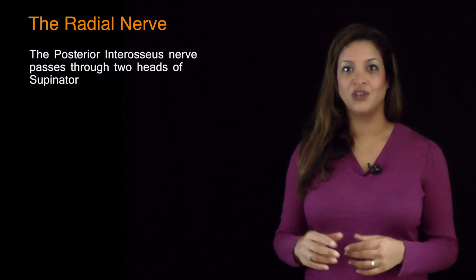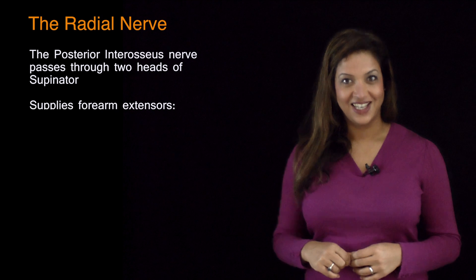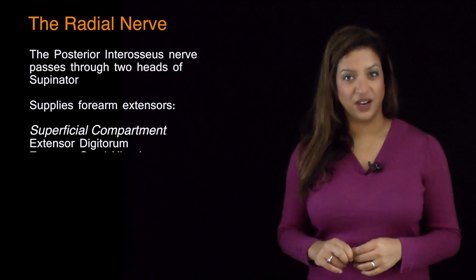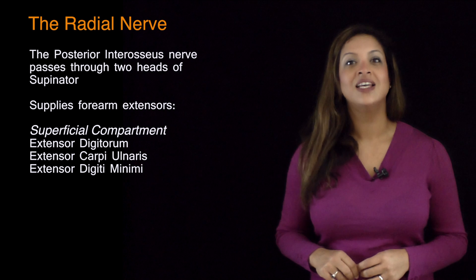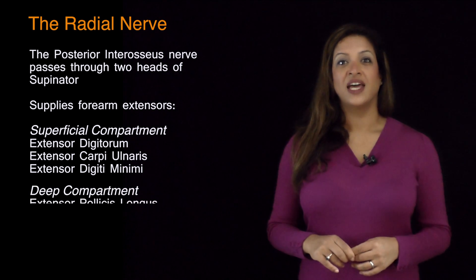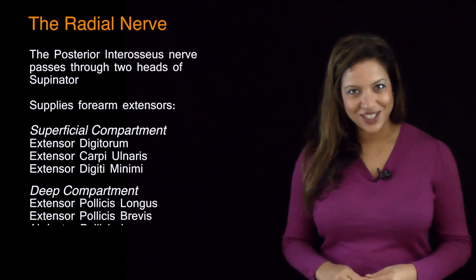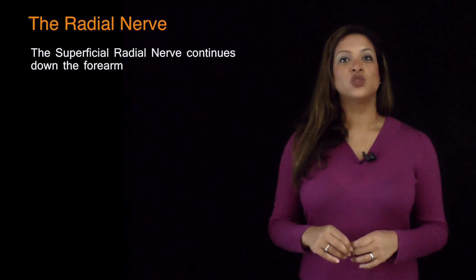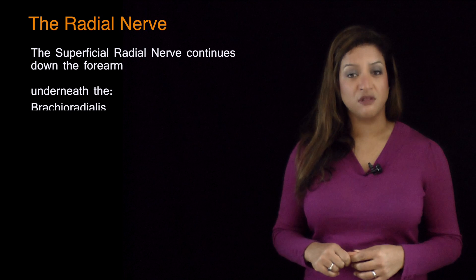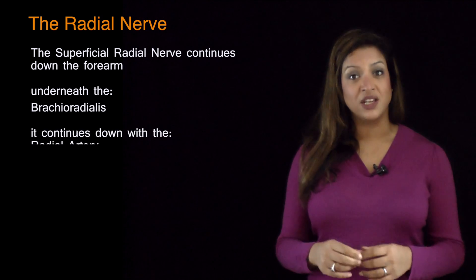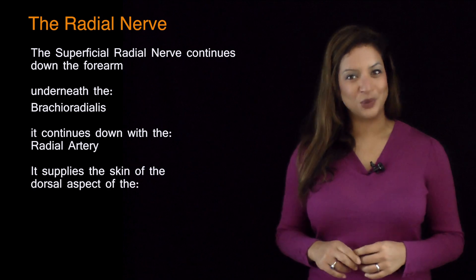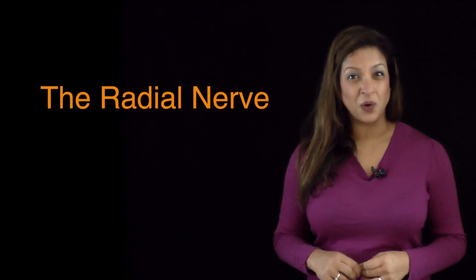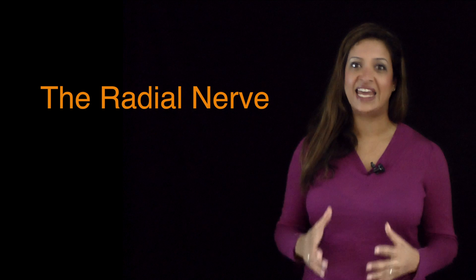The posterior interosseous nerve enters the forearm between the heads of supinator and supplies all the forearm extensors: extensor digitorum, extensor carpi ulnaris, extensor digiti minimi, and the deep compartment muscles — extensor pollicis longus, extensor pollicis brevis, abductor pollicis longus and extensor indicis. The superficial radial nerve continues down the forearm underneath brachioradialis alongside the radial artery, supplying the skin over the dorsal aspect of the hand. The radial nerve is a large and important nerve that is frequently examined.